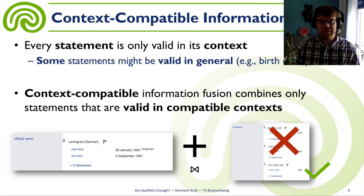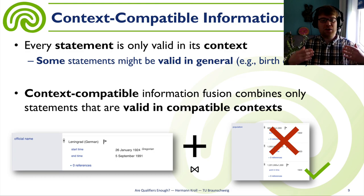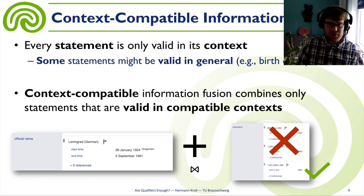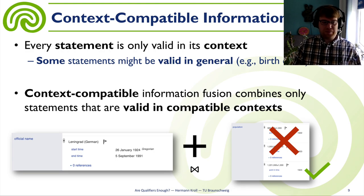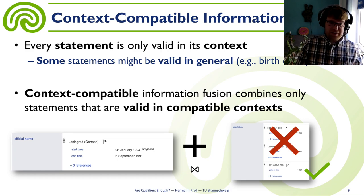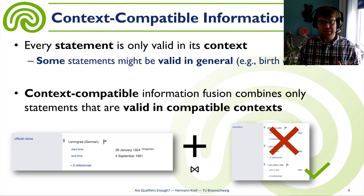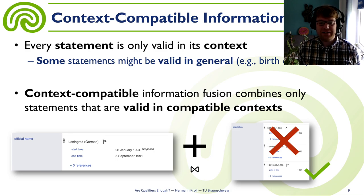I would like to talk about context-compatible information fusion for knowledge bases. Our basic idea is that a statement is only valid in its context. Think about a therapy in biomedicine: it is only valid within a certain dose, treatment group, duration, and so on. Or statements like names or populations are only valid within some time frame. There might be statements which are valid in general — like birth dates — and you can use them in any context. But if a statement is only valid in a context, then we should consider these contexts in the information fusion step. If we combine two statements, we should ensure that they are valid in the same or compatible context. This is the main argument of our work.